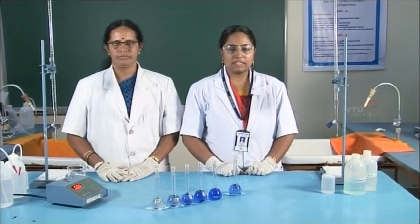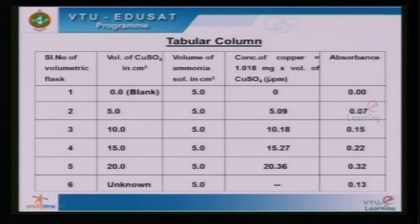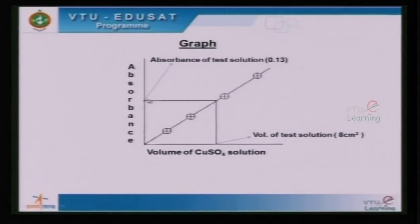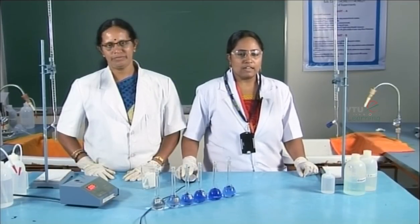All the absorbance readings have to be tabulated. In the last column, the absorbance readings are written, and in the fourth column, the concentration of copper in each standard flask is calculated. For finding out the concentration in the unknown solution, we plot a graph of absorbance versus volume of the copper solution added. We have seen that the absorbance of the test solution is 0.13. From the graph, the volume of the test solution was found to be 8 cm³. The calibration graph is a straight line passing through the origin.